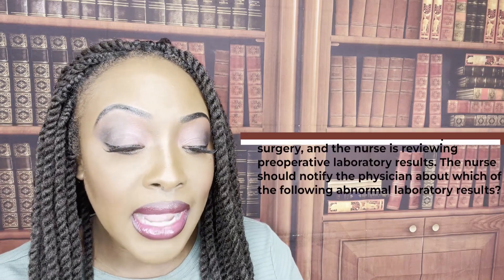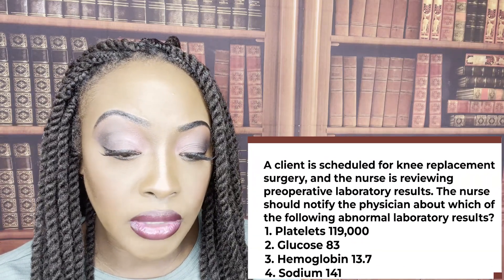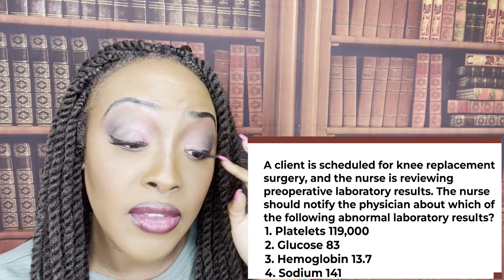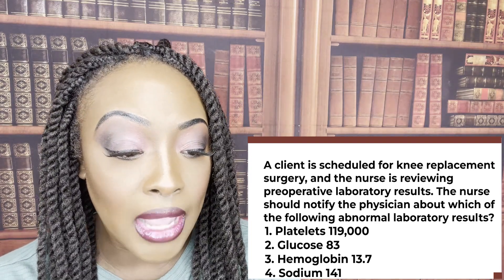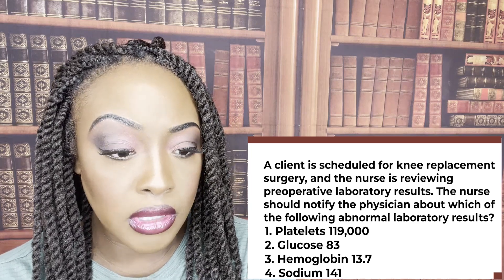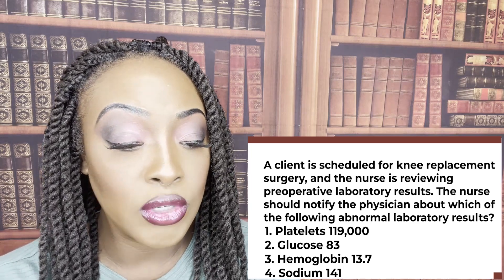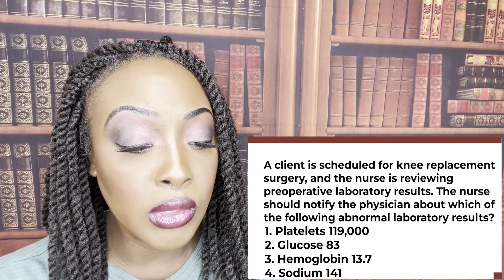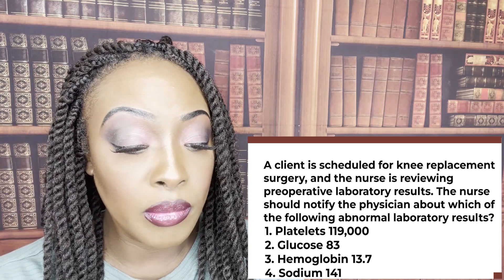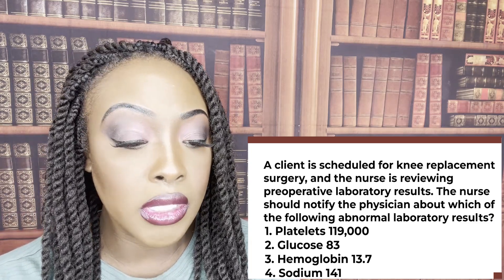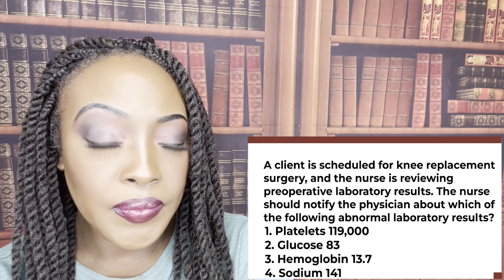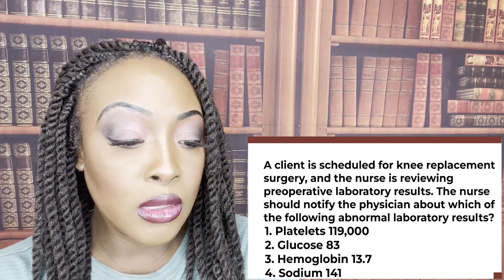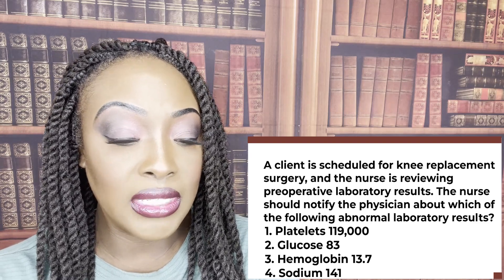All right, guys, let's get started. First question. A client scheduled for a knee replacement surgery, and the nurse is reviewing preoperative laboratory results. The nurse should notify the physician about which of the following abnormal laboratory results? One, platelet of 119,000; two, glucose of 83; three, hemoglobin of 13.7; or four, sodium of 141. The correct answer is one, platelets of 119,000.